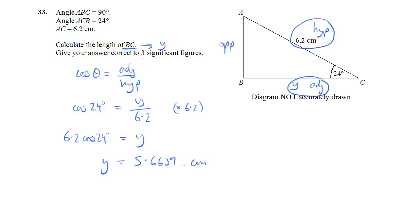Now here we want it to 3 sig figs. So the third sig fig is a 6. The 3 comes after that, telling me not to round it up. So I'll leave it as 5.66 centimeters to 3 significant figures.